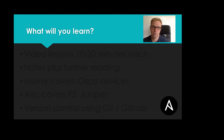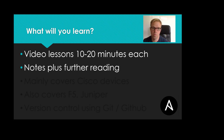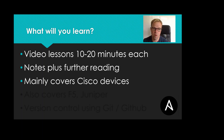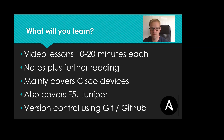So what will you learn on this course? The course consists of a number of lessons broken up into easy-to-digest steps. Each lesson will be 10 to 20 minutes in length and will consist of a video plus some notes for further reading. We are mainly going to be covering Cisco devices but I will also touch on Juniper and F5, and we will be using version control within Git and GitHub. I must emphasize this course is not going to teach you about network administration or how to configure networks — it assumes a reasonable level of understanding of network administration. If you are already working in a network admin role and would like to learn more about network automation, please continue watching.